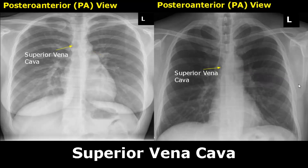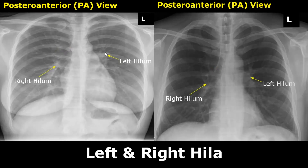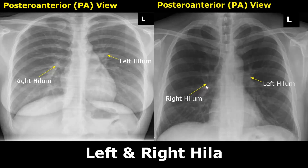The superior vena cava is seen over here, superimposed over the trachea and the bronchus. Here is the left hilum; it contains the left pulmonary artery, the left main bronchus, two pulmonary veins, nerves, lymph vessels, and other blood vessels. The right hilum contains the pulmonary vessels, the right main bronchus, nerves, lymph vessels, and other blood vessels. The left hilum is slightly higher than the right hilum.